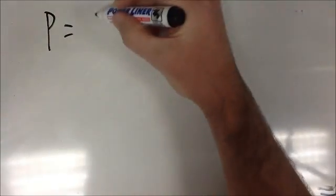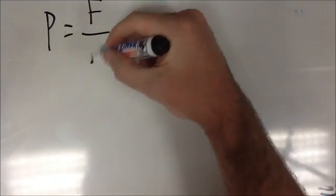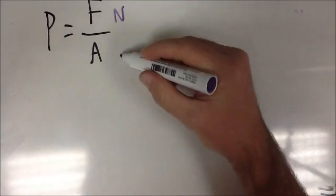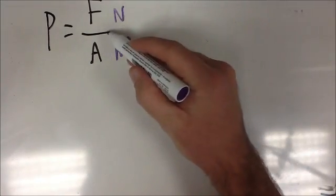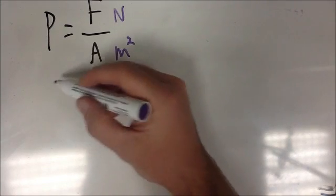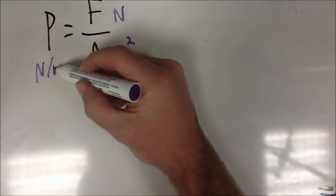Pressure, you may remember from Key Stage 3, equals force over area. Force is measured in newtons, area is measured in meters squared. So if you divide newtons by meters squared, we come up with newtons per meter squared.